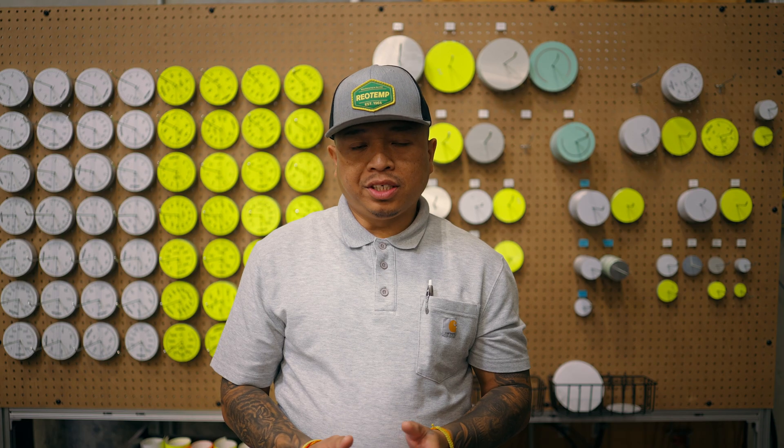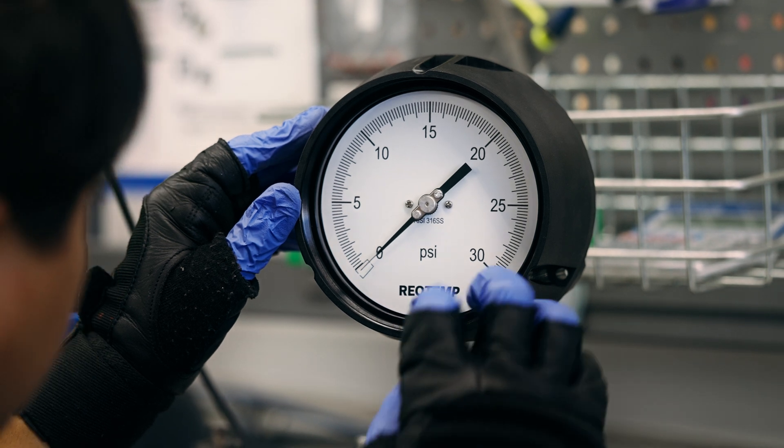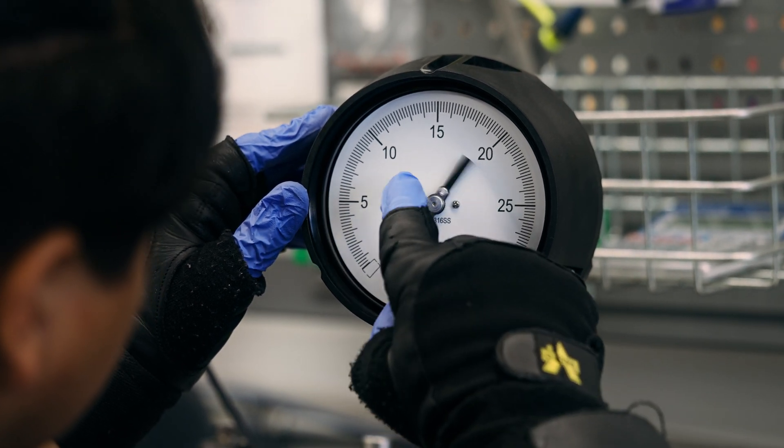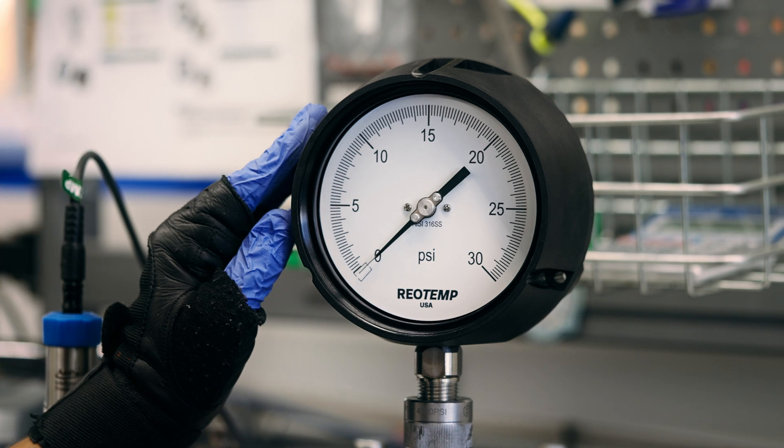For newly installed gauges, the most common failure is clogging of the pressure orifice. This is especially common on gauges that have a restrictor screw installed.